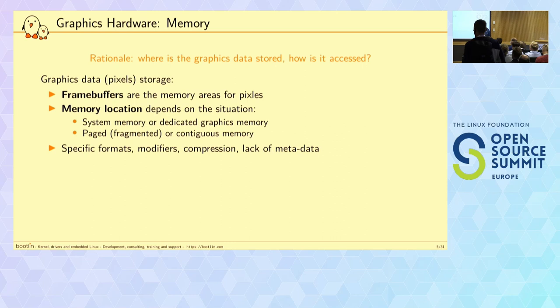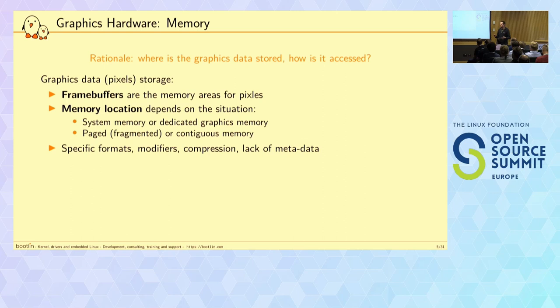The first thing I wanted to mention is how graphics pixels are stored. We have this notion of a framebuffer, which is really just a word to describe the memory area where the pixels are stored. That memory area can actually be in different places. The first situation is that we use system memory — the general DRAM of your system — and we store the pixels there, and then we have hardware that accesses that memory. But we can also have dedicated graphics memory. For example, in your graphics card you will have something called VRAM, which is video RAM — memory dedicated to the purpose of graphics, usually attached to the GPU or to the graphics card.